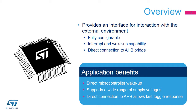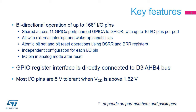Application benefits include a wide range of supported I.O. supply voltages, as well as the ability to externally wake up the MCU from low power modes. The General Purpose I.O. ports provide bidirectional operation according to the input memory map. I.O. ports are directly connected to the AHB bus, which allows fast I.O. pin operations such as toggling an output, with an independent configuration for each I.O. pin.